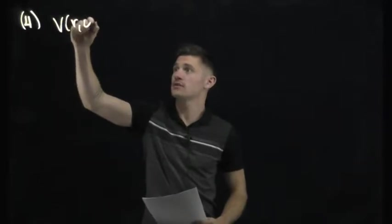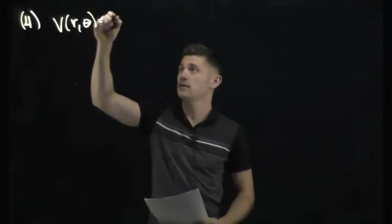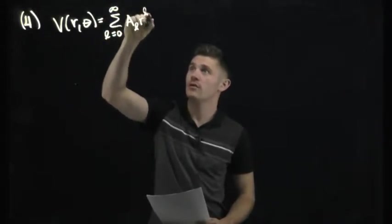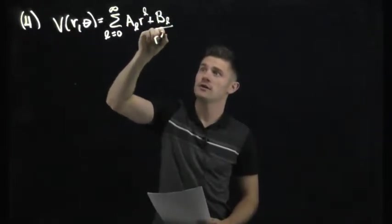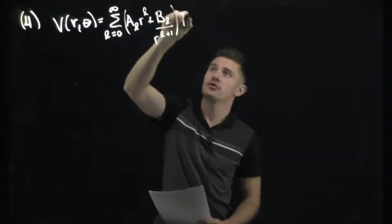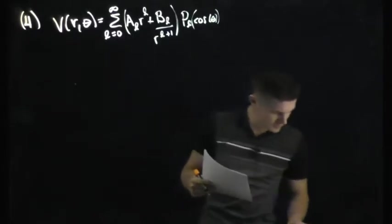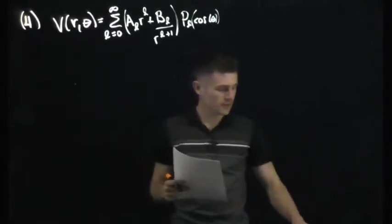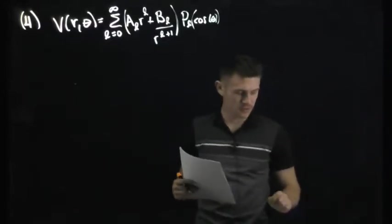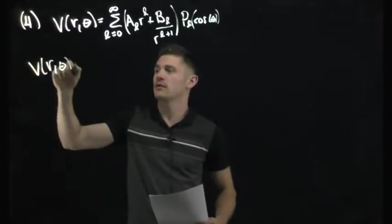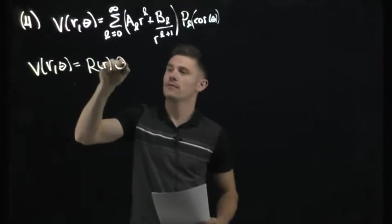We'll do problem 4 from the practice midterm. Problem 4 gives you the potential solution for spherical symmetry: V(R, θ) equals the sum from L=0 to infinity of (A_L · R^L + B_L / R^(L+1)) multiplied by the Legendre polynomials P_L(cosθ). This is equation 3.65 in Griffiths. The general solution is a linear combination of the separable solutions found from solving the separated equation R(r)·Θ(θ).